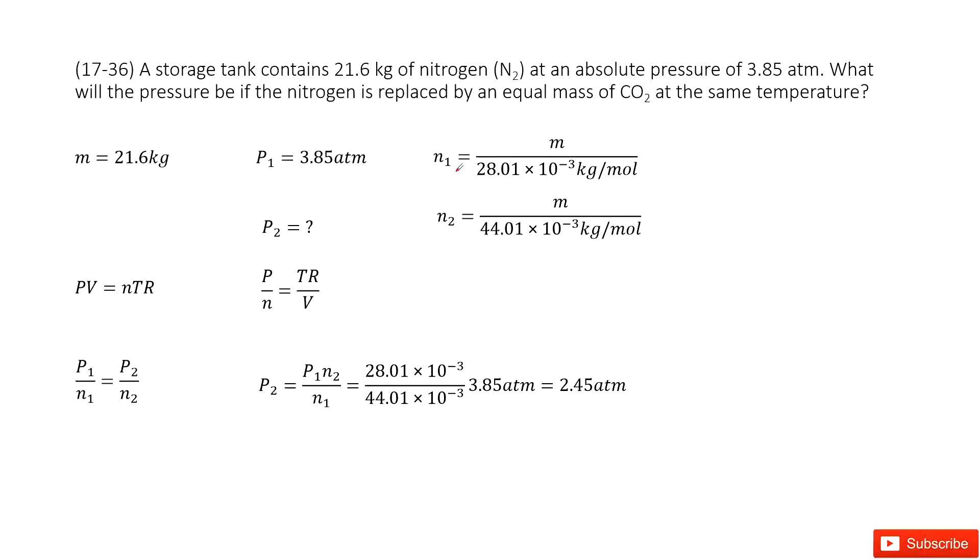Chapter 17 is about temperature, thermal expansion, and ideal gas law. So in this one, we can see we have the ideal gas in the storage tank. And the mass for this nitrogen gas is given. The initial pressure is given P1.